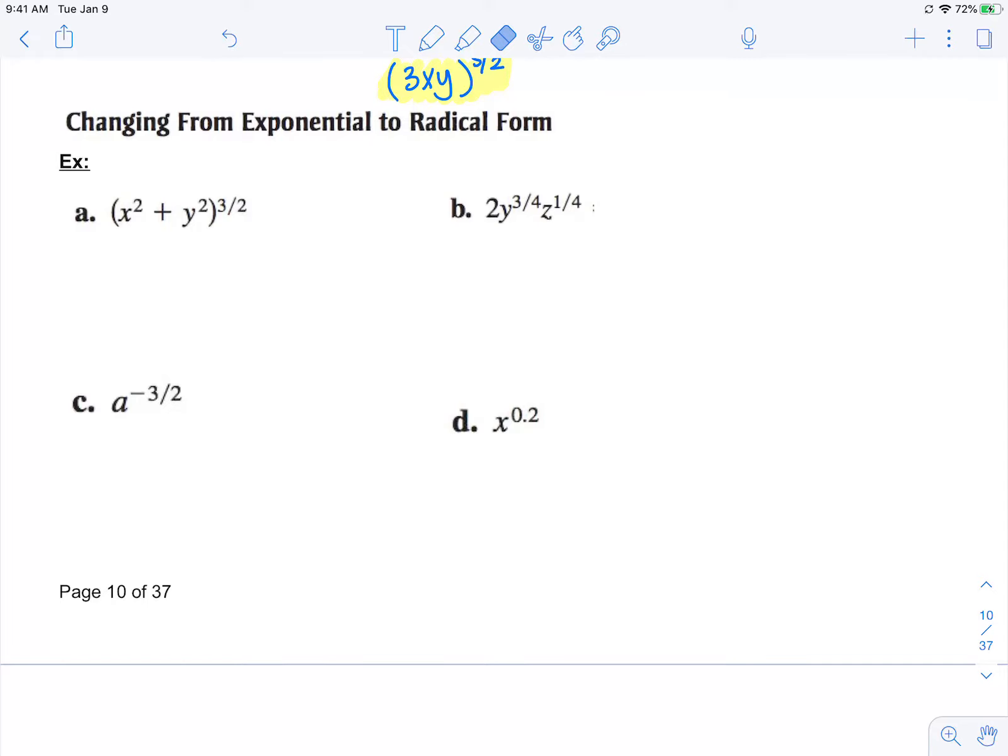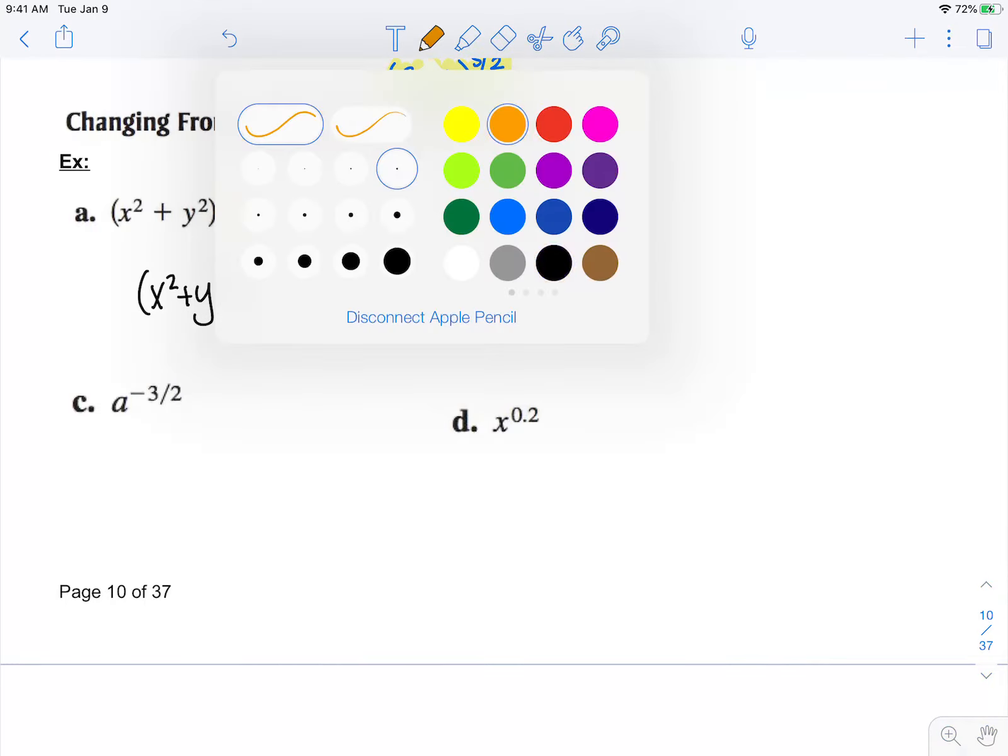Now let's do the opposite and change from exponential to radical form. In part a, the quantity that's being raised to a power is x squared plus y squared, so that doesn't change. The denominator is always the index of my root.